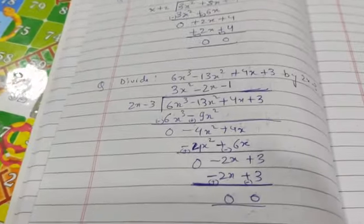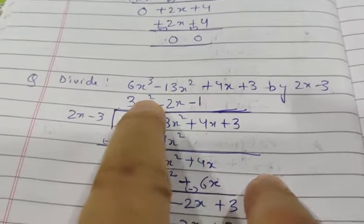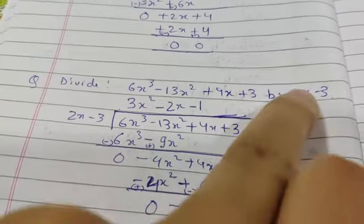We have one more example. This is 6x cubed polynomial divided by 2x minus 3.